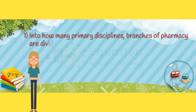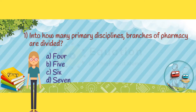Question 1. Into how many primary disciplines are branches of pharmacy divided? Option A: 4. Option B: 5. Option C: 6. Option D: 7.